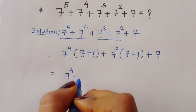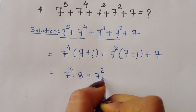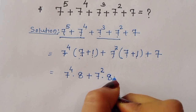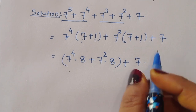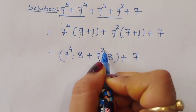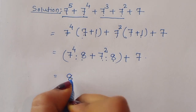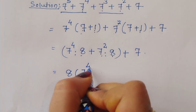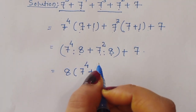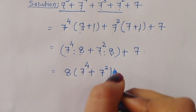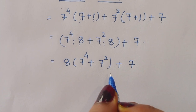Now 8 is common in both terms, so we can take 8 outside. This gives us 8 times 7 power 4 plus 7 power 2, and then plus 7 remaining outside. Now for the bracket 7 power 4 plus 7 power 2, we can simplify further.